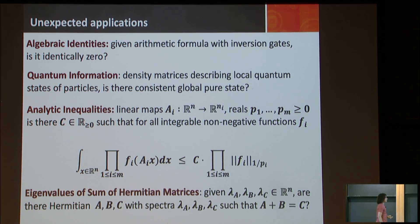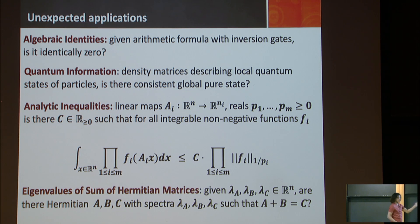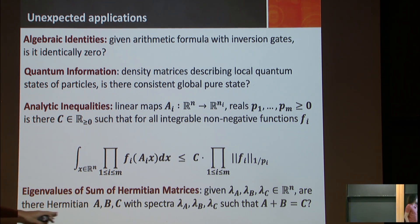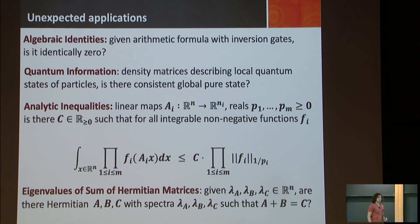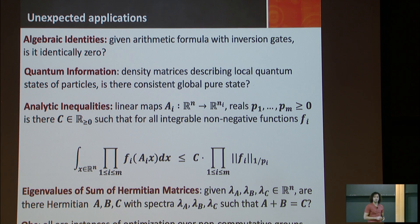The fourth problem is the eigenvalues of sums of Hermitian matrices. If I give you a set of spectra — eigenvalues in non-increasing order, lambda_A, lambda_B, lambda_C — are there Hermitian matrices A, B, C with these eigenvalues such that A plus B equals C? This is a very famous and old problem called Horn's problem. As we'll see in this talk, all of these problems are instances of optimization over non-commutative groups.